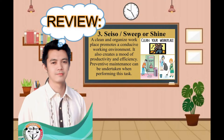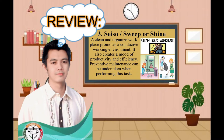Number three, Seiso, or what we called sweep or shine. A clean and organized workplace promotes a conducive working environment. It also creates a mood of productivity and efficiency. Preventive maintenance can be undertaken when performing this step. Seiso is the third step of the 5S method. It means to make everything shiny clean. A clean and orderly workplace gives efficiency and productivity when we work, and creates good conditions to be productive in our tasks.